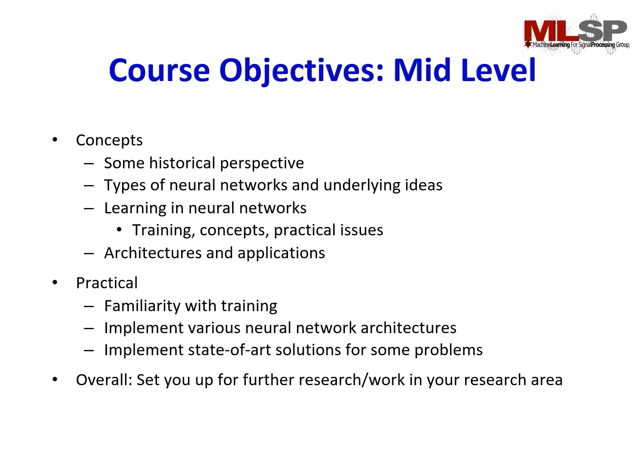The main-level course objective is for you to have some historical perspective about neural networks, the types of neural networks and how they work, and how neural networks learn by training — covering the various concepts and practical issues you may face while training a real neural network. We'll also talk about the architectures and applications, as well as practical aspects. Overall, our objective is to set you up for further research work in your research area.